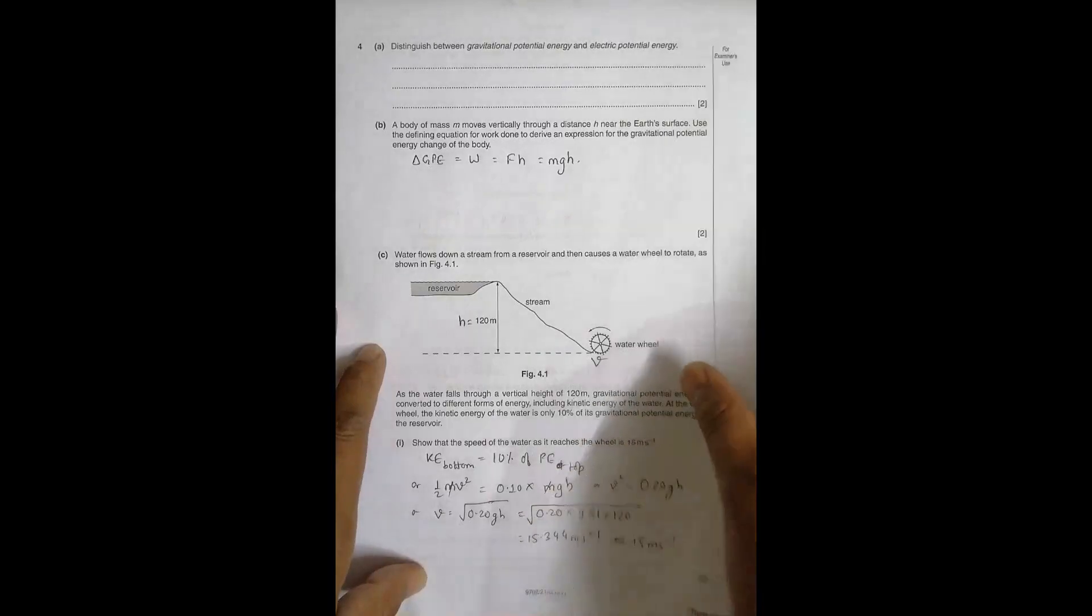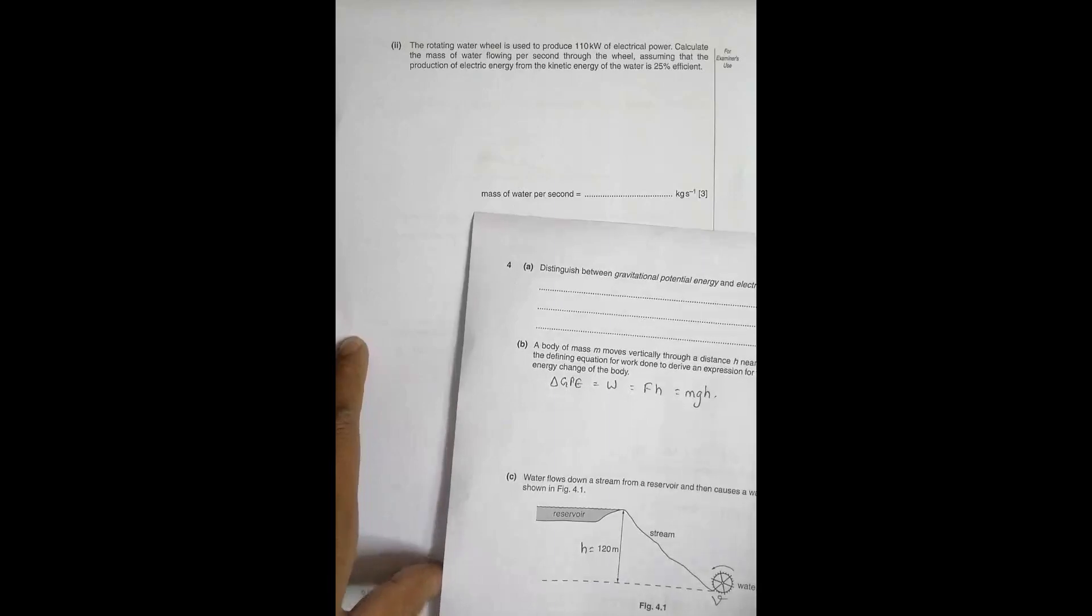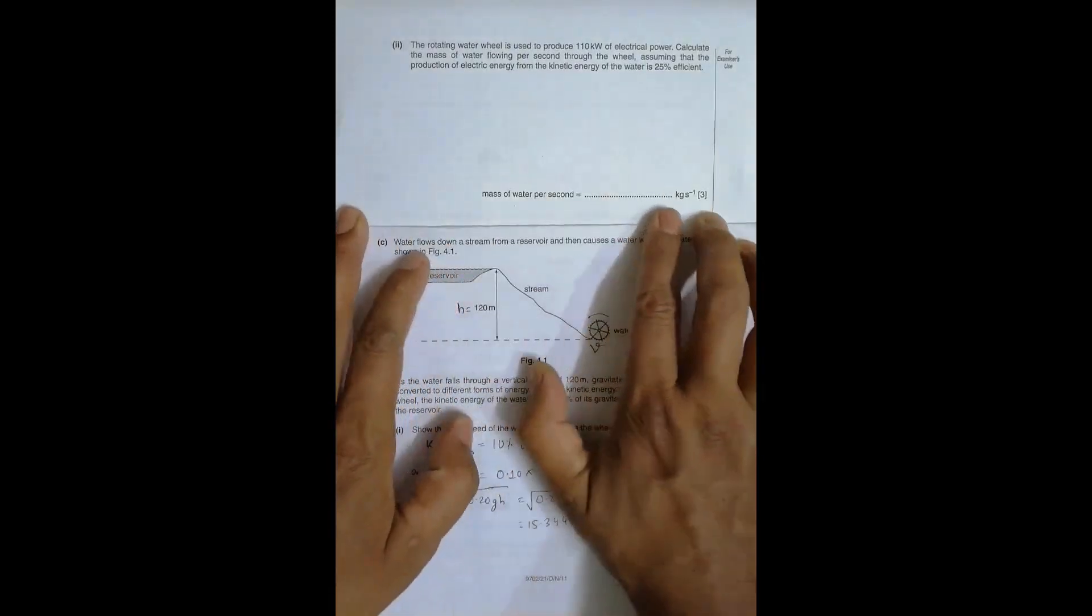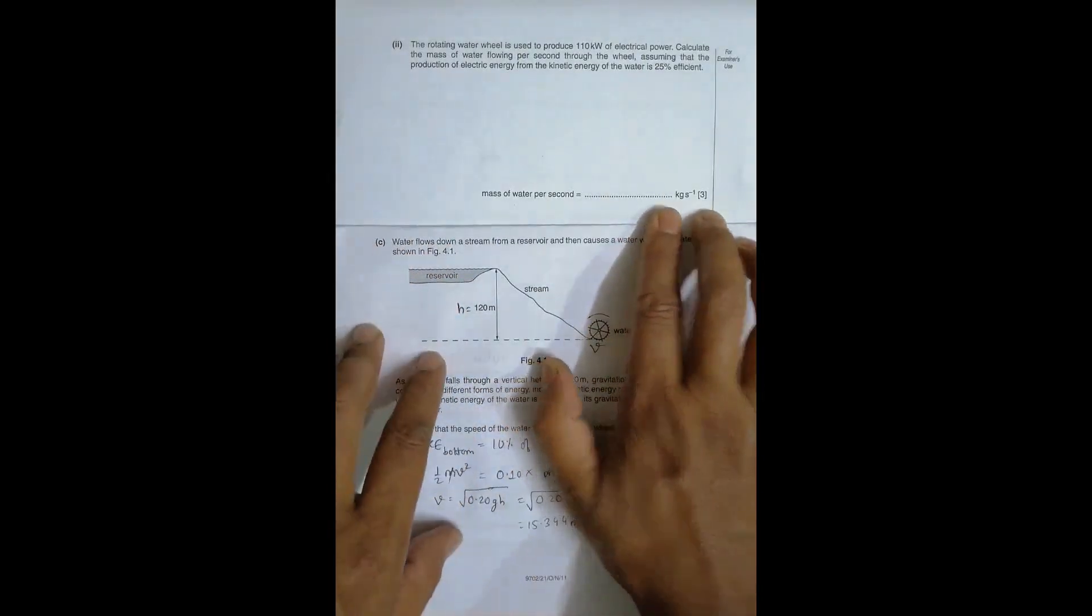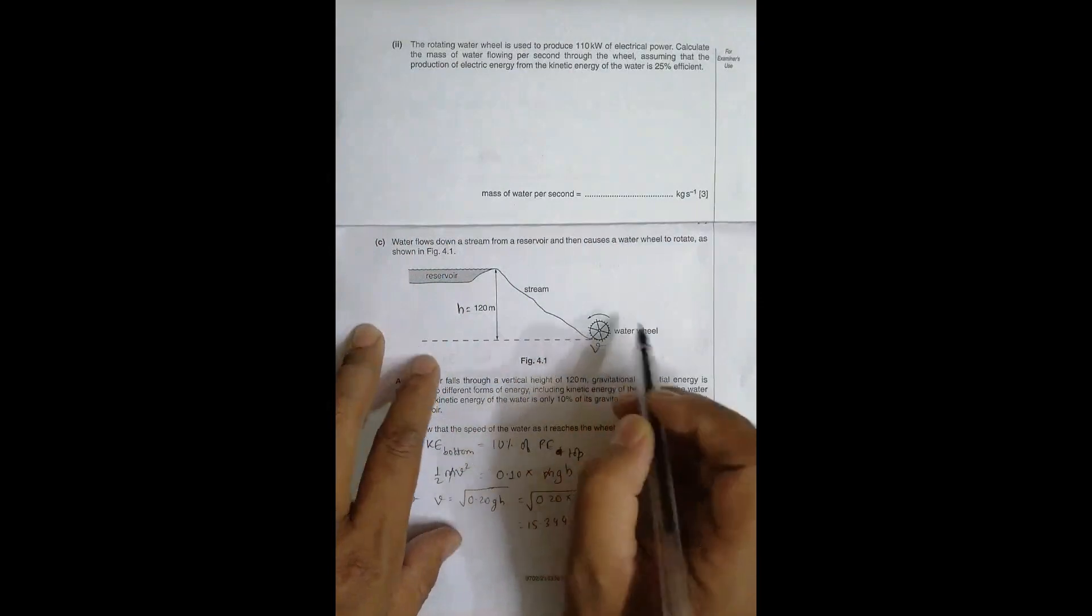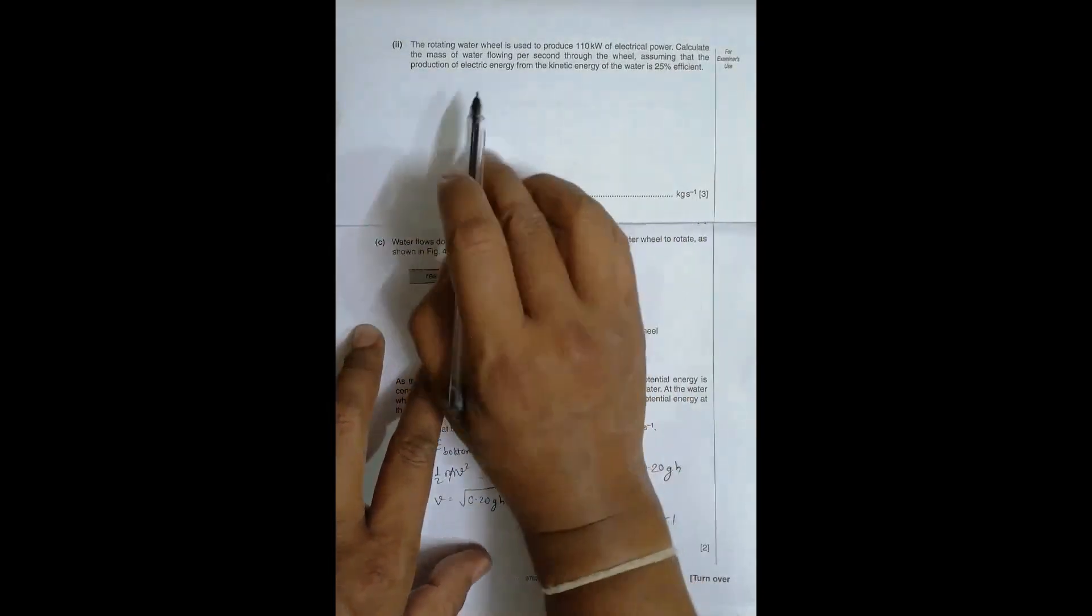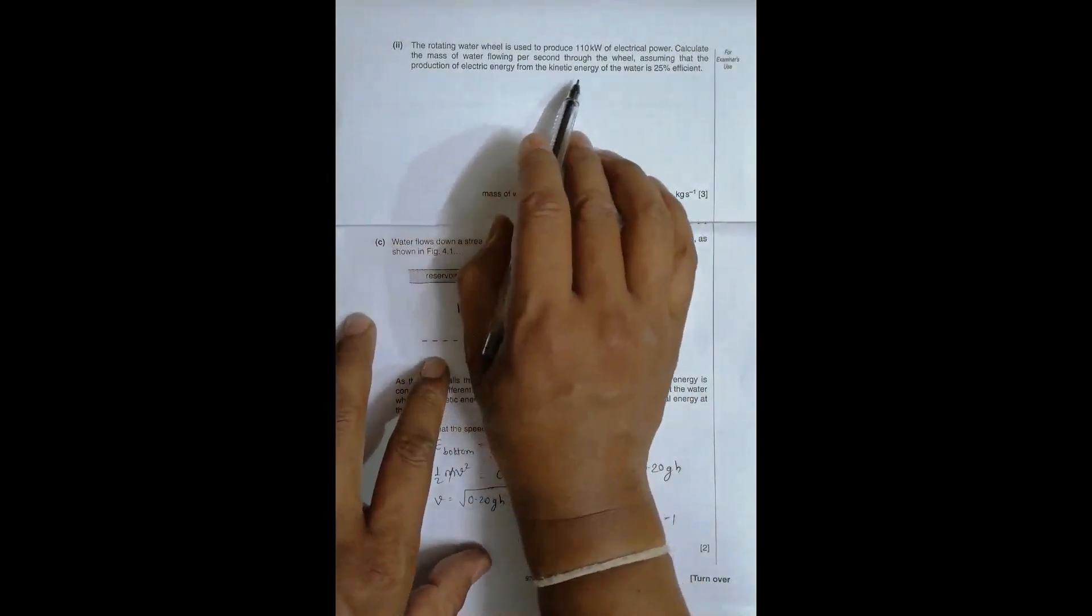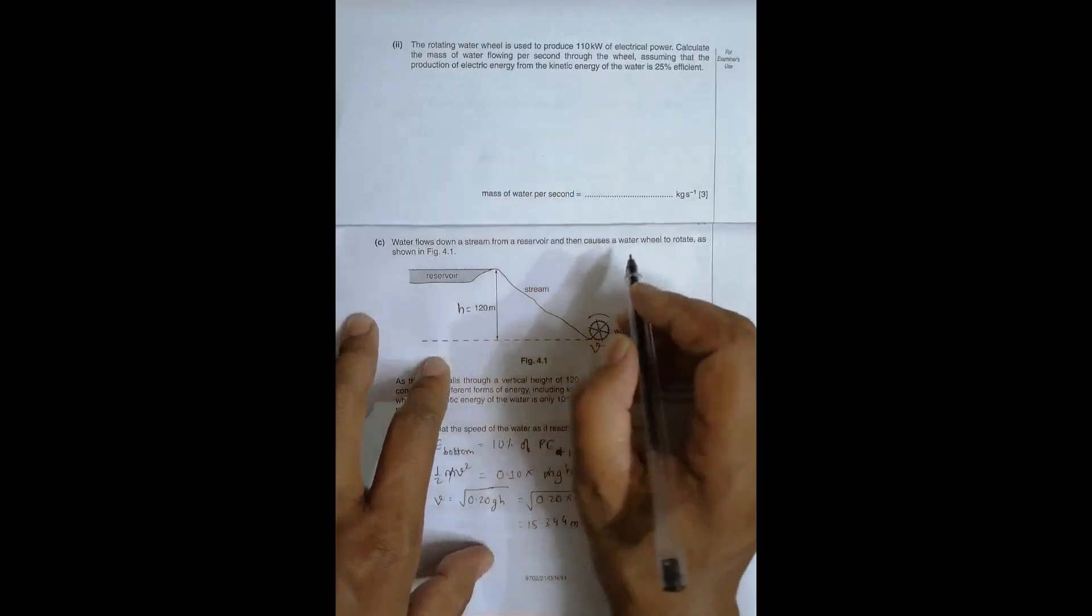Now, the next question is, the rotating water wheel is used to produce electricity, and that is, it is given as 110 kilowatt of electric power. Calculate the mass of water flowing per second through the wheel, so mass of water coming through the wheel,